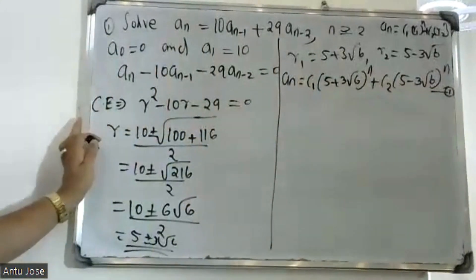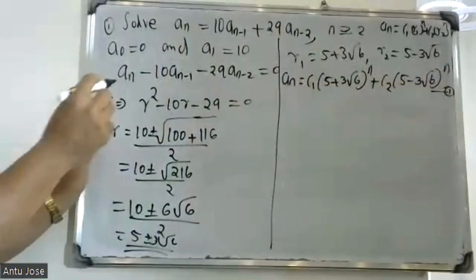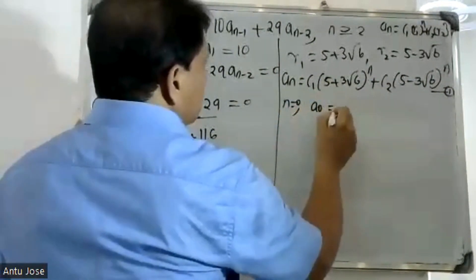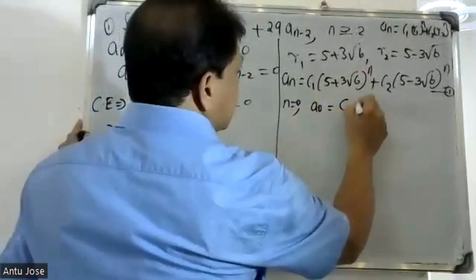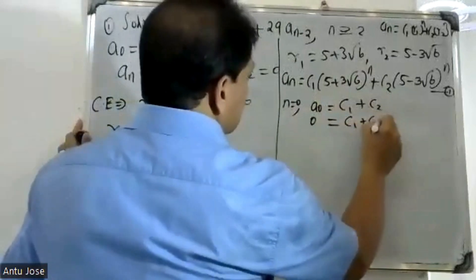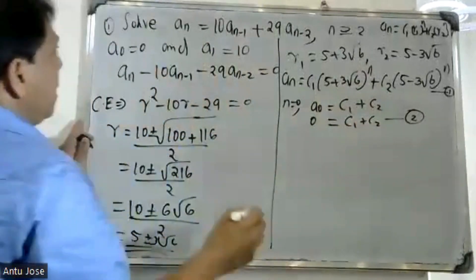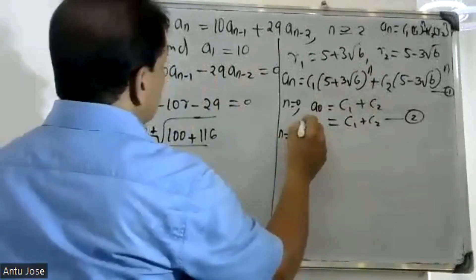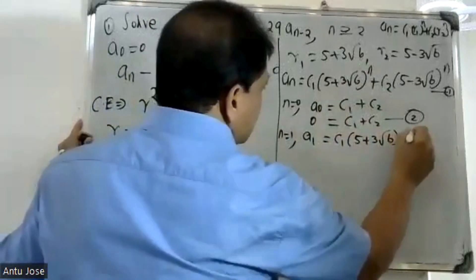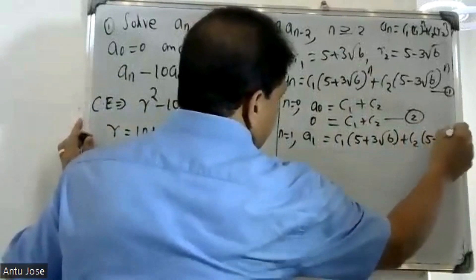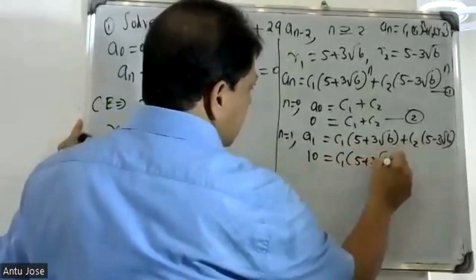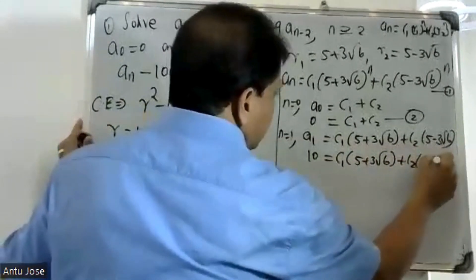Now we apply boundary conditions. For n = 0: a₀ = C₁ + C₂. That gives us C₁ + C₂ = 0. For n = 1: a₁ = C₁·(5 + 3√6) + C₂·(5 − 3√6), which equals 10.